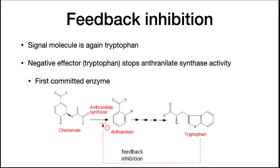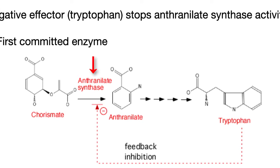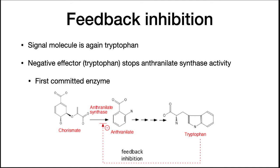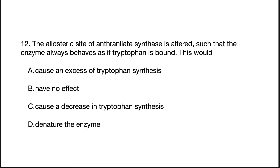There is a third level of regulation in tryptophan biosynthesis. Tryptophan is the effector molecule for the allosteric enzyme anthranilate synthase, the first step in the pathway. When the end product of the pathway, tryptophan, attaches to anthranilate synthase, the enzyme is inactive. If tryptophan levels drop, tryptophan will release from anthranilate synthase, the enzyme becomes active again, and tryptophan synthesis resumes. Tryptophan biosynthesis is so heavily regulated because you only want to make as much tryptophan as you need and no more. The operon is an excellent example of how regulation is tuned to just the right level. If the allosteric site of anthranilate synthase is altered such that the enzyme always behaves as if tryptophan is bound, that would — C is the correct answer — cause a decrease in tryptophan synthesis. D is incorrect because the enzyme is not destroyed; it is only shut off.